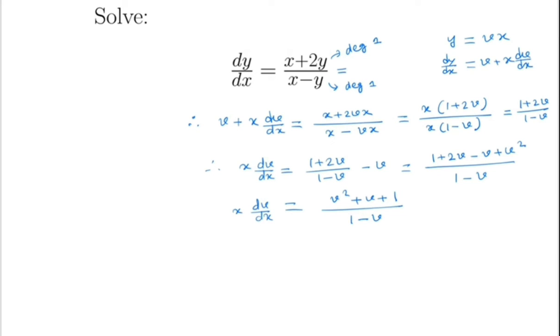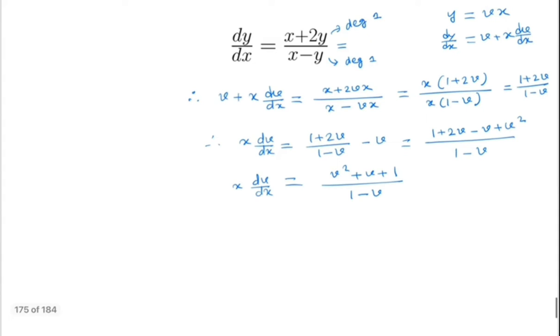We separate the variables x and v. By separating, we get (1 - v) / (v² + v + 1) dv = dx/x.